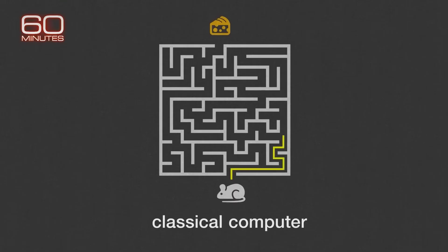Physicist Michio Kaku of the City University of New York already calls today's computers classical. He uses a maze to explain quantum's difference. Let's look at a classical computer calculating how a mouse navigates a maze. It is painful — one by one, it has to map every single left turn, right turn, left turn, right turn, before it finds the goal.